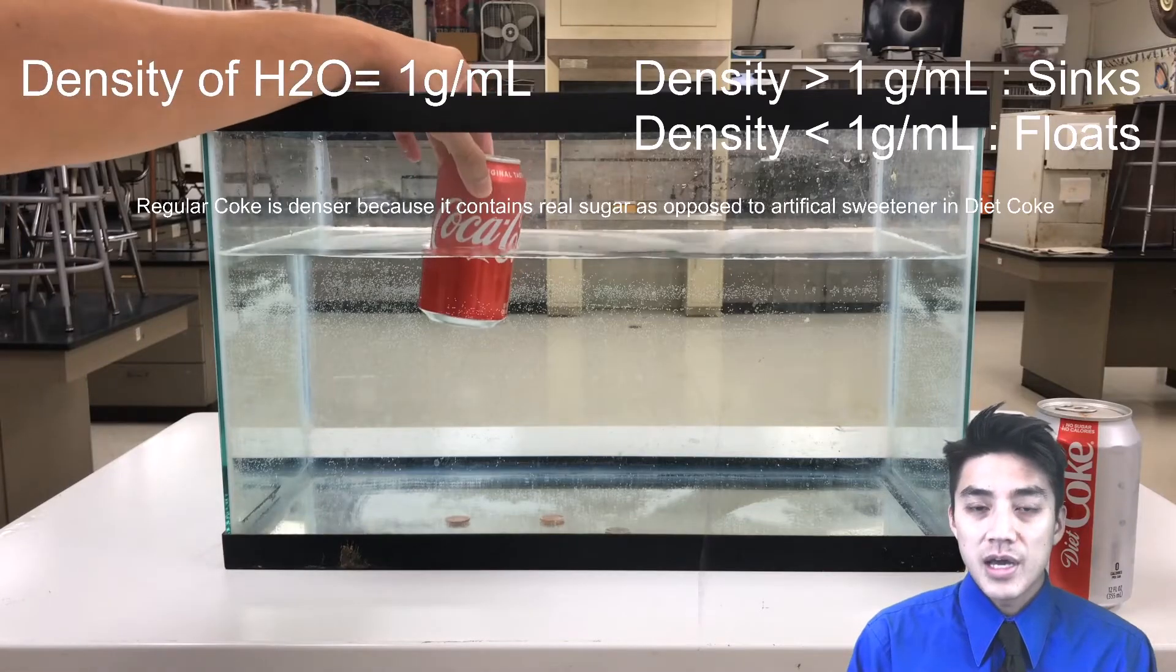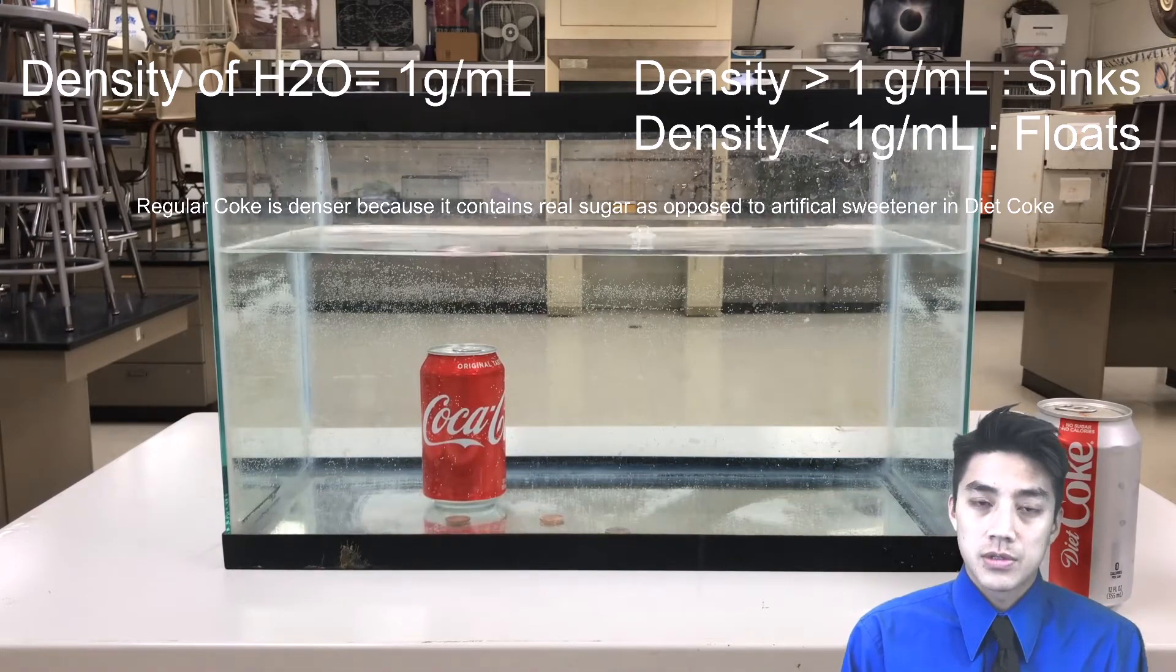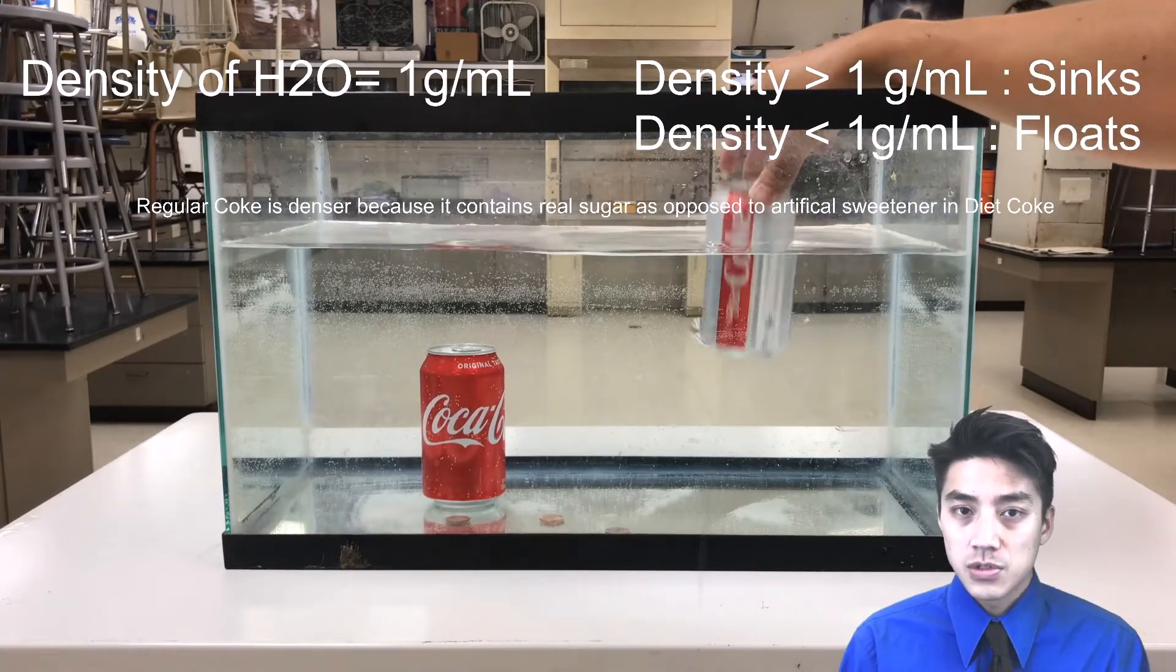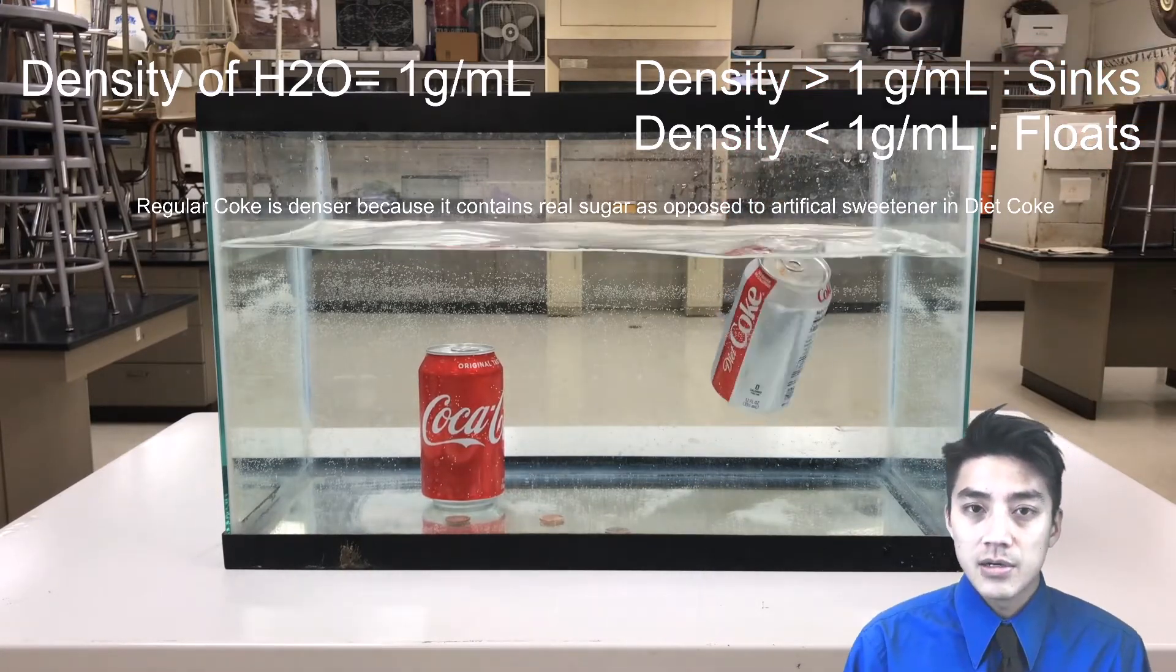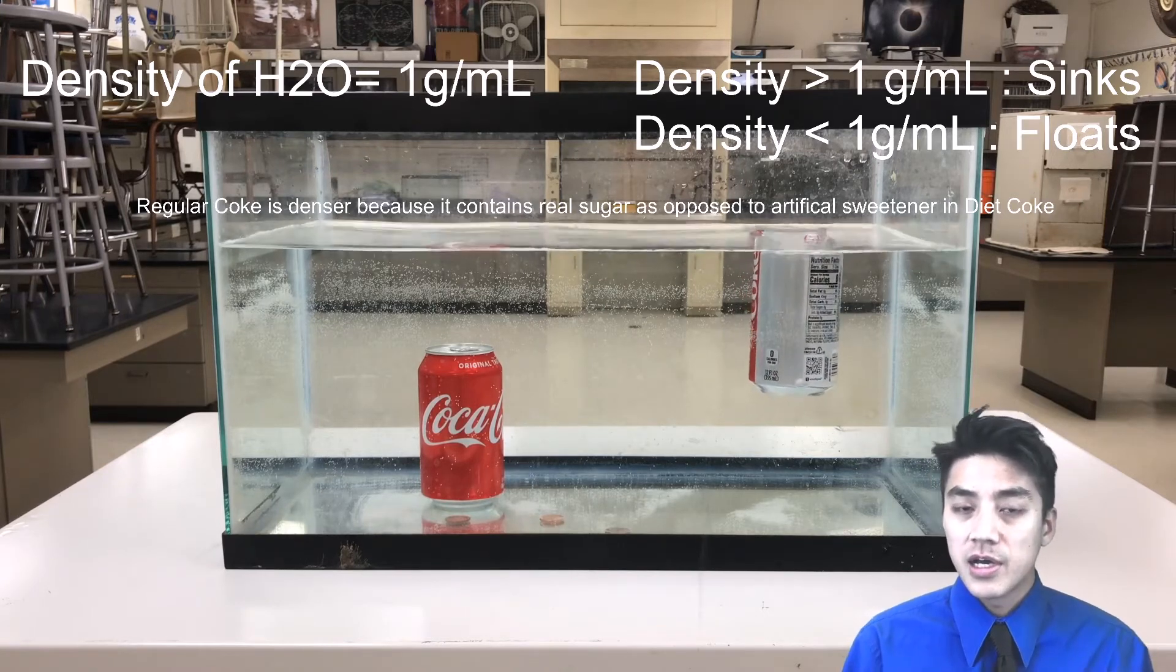In a different example, you have regular coke, which sinks in water because it contains real sugar, real sucrose, which actually is denser than the artificial sweetener that's used in Diet Coke. The artificial sweetener is not as dense, therefore the can of Diet Coke floats.